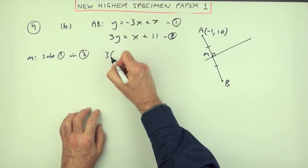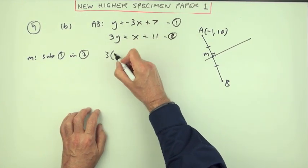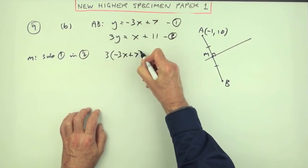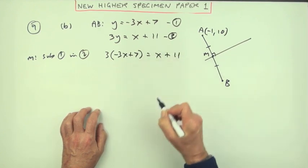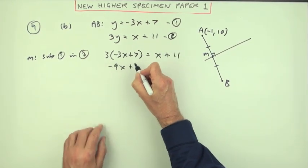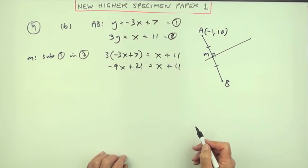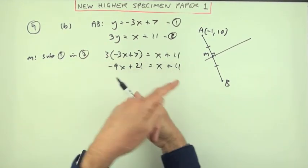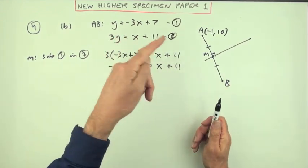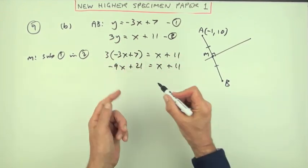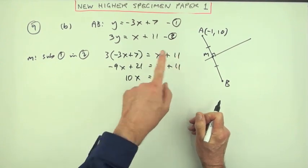I'll substitute equation 1 into 2. Number 2 says 3 times y. Well, y is -3x plus 7, should equal x plus 11. Multiply the brackets: -9x plus 21 is x plus 11.